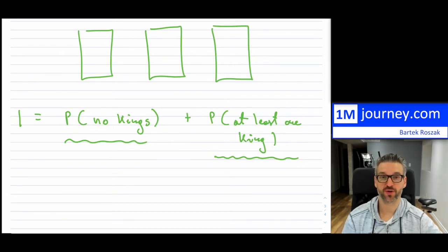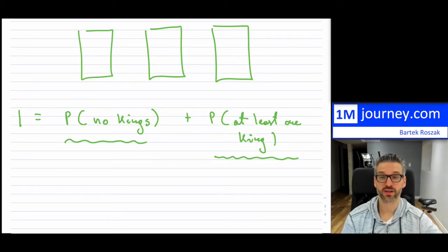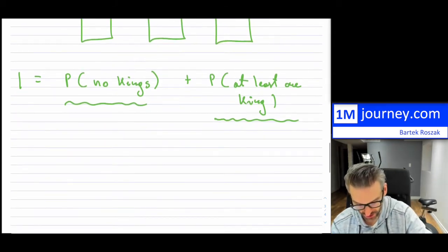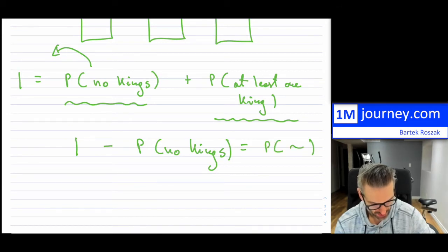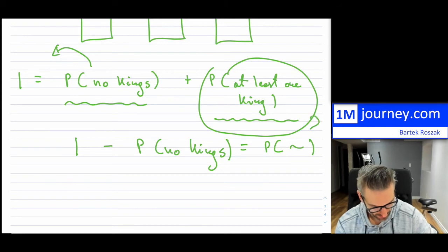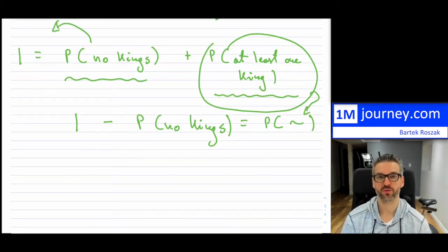Having at least one king means you can draw three cards with one of those as a king — it can be the first, second, or third card. Or maybe two of the three cards are kings. As you can see, there are many combinations. Drawing no kings at all is much easier to calculate. We can rearrange so that the probability of at least one king equals 1 minus the probability of no kings. That's the rule of complements.